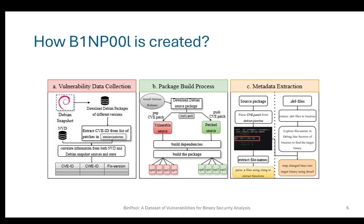After building the package, we're going to have a bunch of .deb files. In order to get the final binaries, we have to extract the .deb files. After extracting them, you're going to see a bunch of binaries. In order to understand which binary contains the vulnerable or the patched function, we had to map the module name to the compilation units in the binary using the debug line section. We collected all this data in a JSON file in our dataset. We also provide scripts to automatically extract this data.